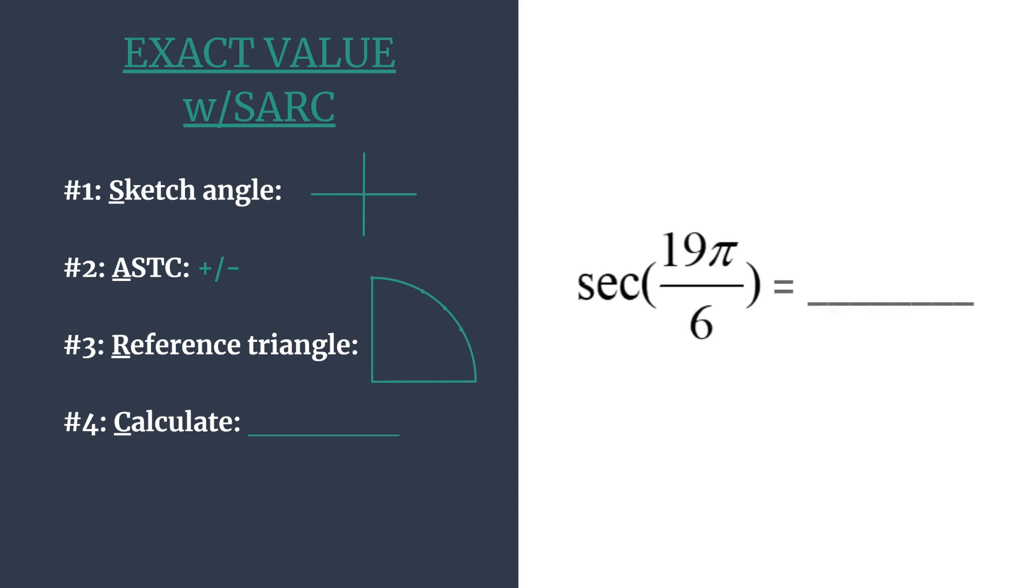Let's find the secant of 19π over 6. We'll start by sketching the angle's terminal side. We have a positive angle which means it's rotating counterclockwise, and one thing to notice is that it's more than one counterclockwise rotation.